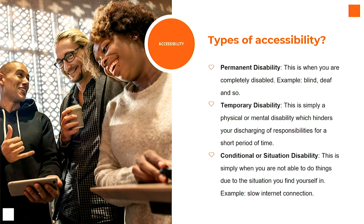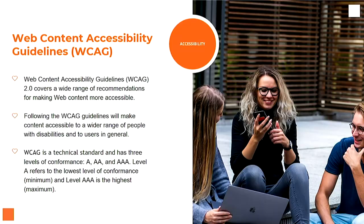So we actually have three types basically. We have the permanent disability, a temporary disability — it might just be something making it hard for us for a short period of time — and that conditional or situational disability. From our point of view, that's probably the largest one: people's internet connections. That is actually considered a disability. I live in a remote area of Victoria — not that remote, but in the country anyway — so my internet connection might be a little different to everybody else in the city, whereas at our workplace we've got super fast internet. That's still considered an accessibility reason.